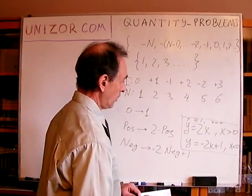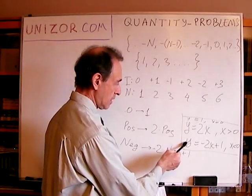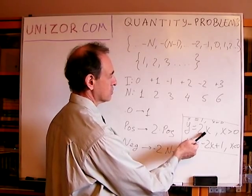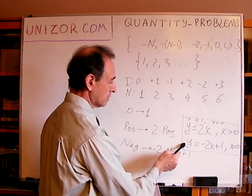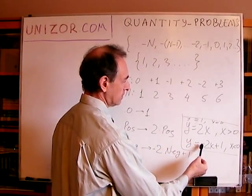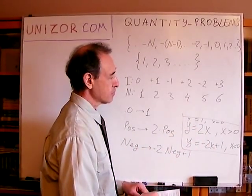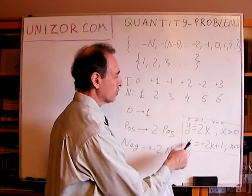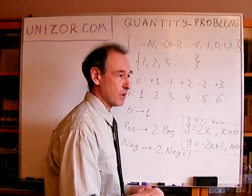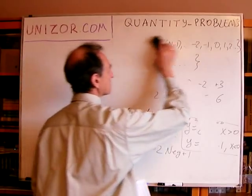Is this reversible? It is. Positive integers map to even natural numbers; negative integers map to odd natural numbers. For every even natural number, divide by two to get the corresponding integer. For every odd natural number, subtract one, reverse the sign, and divide by two. These formulas establish not just a one-to-one correspondence but a reversible, invertible one-to-one correspondence. That's it for problem one.